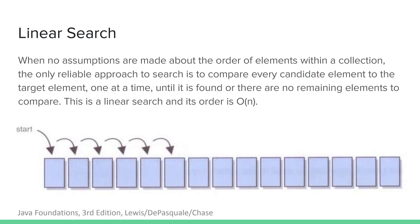When we can't make any assumptions about the relative ordering of elements in a collection, the only reliable approach to searching is to compare every candidate element to the target in order, one at a time, until we either find a matching element or run out of candidate elements. On average, we can expect to compare half the elements before finding the one we're looking for, assuming we're generally searching for elements known to be in the collection. The order of linear search is O(N) — linear. The advantage of this type of search is that it's guaranteed to work regardless of the ordering of elements. The downside is the linear order.